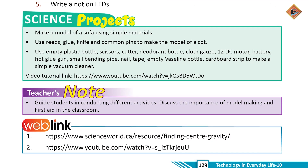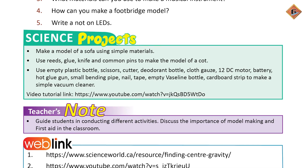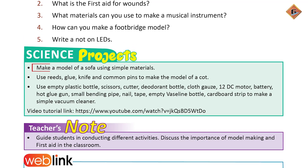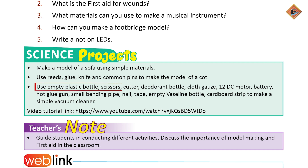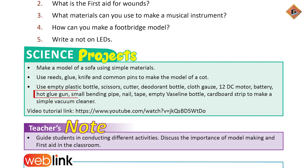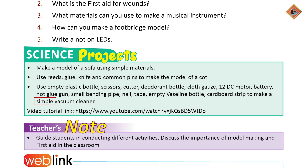Ab hum baat karte hain science projects ki — page number 129 par. Pehle ek model making karni hai of a sofa. Uske baad use reeds, glue, knife, and common pins to make a model of a coat. Uske baad use empty plastic bottles, scissors, cutter, deodorant bottle, cloth, gauze, 12V DC motor, battery, hot glue gun, small bending pipe, nail, tape, empty Vaseline bottle, and cardboard strips to make a simple vacuum cleaner.